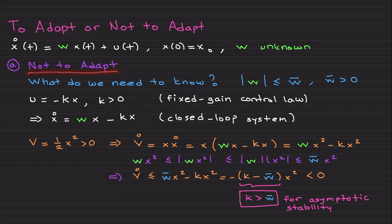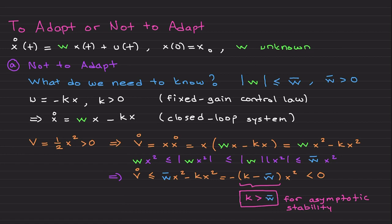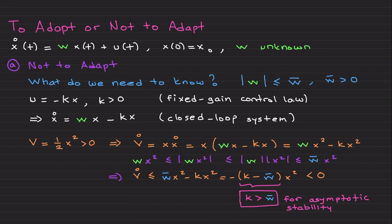First, I'll start with 'not to adapt' — I prefer not to use an adaptive control law or learning mechanism, and instead use a fixed gain robust-like control law. The first question is: what do we need to know? From the analysis you'll see that when we use a fixed gain control law such as u = -kx, where k is a positive constant, we need to know an upper bound of the unknown term. In this scalar example, there is one unknown term w.